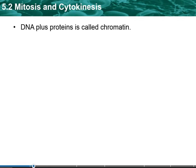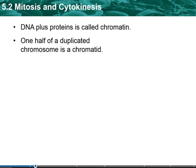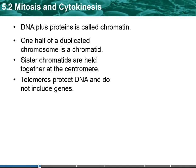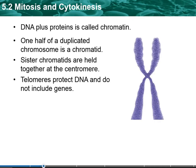When it gets ready to divide, it's going to keep coiling and form the supercoiled DNA, which will eventually form the chromosome. So it will really start wrapping around itself and condensing. The DNA plus the proteins is called chromatin. One half of a duplicated chromosome is a chromatid. The sister chromatids are held together by what's known as a centromere, and then the telomeres are going to protect the DNA and do not include genes.